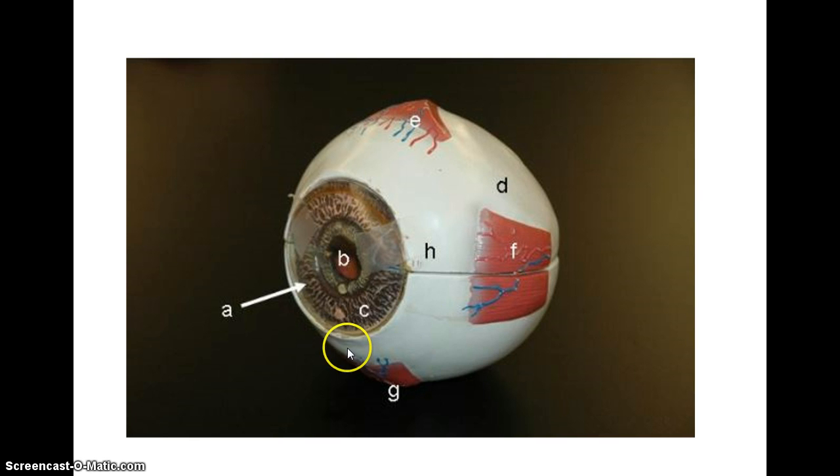So again, let's go through the parts here. We have the sclera. We represent the conjunctiva here. The cornea. The pupil, where the light will travel through. The iris, which is going to control the size of the pupil. We have the superior rectus muscle. The medial rectus muscle. And the inferior rectus muscle.